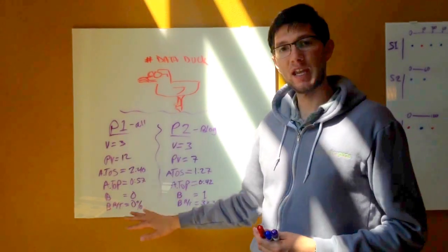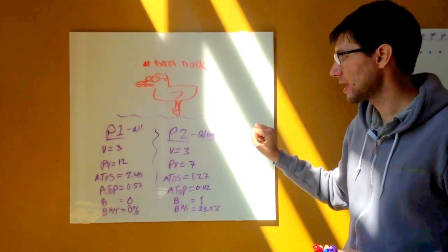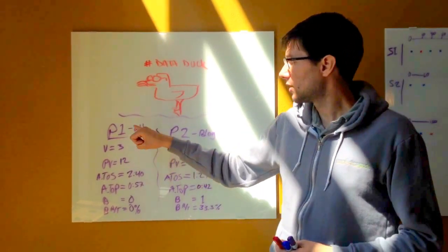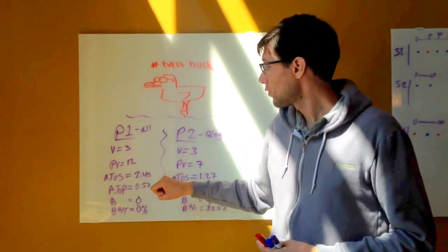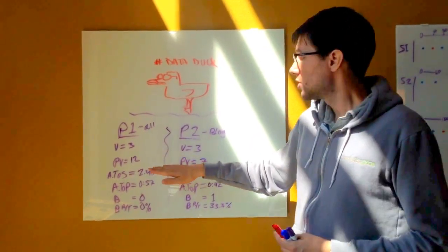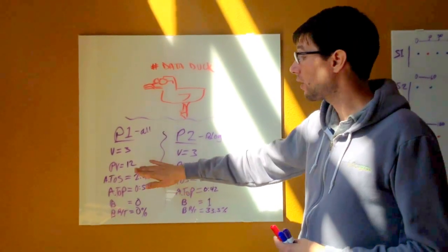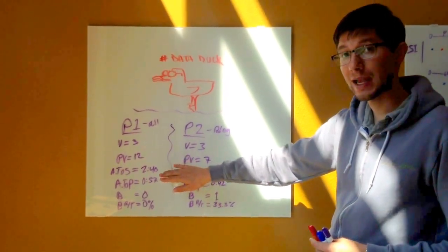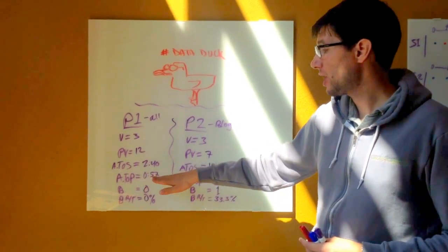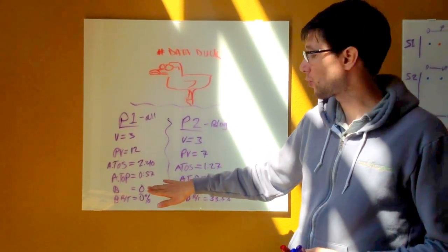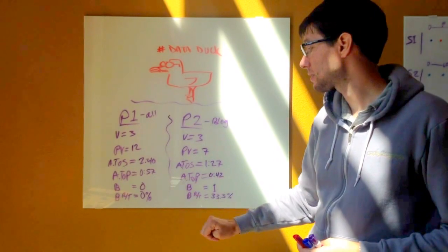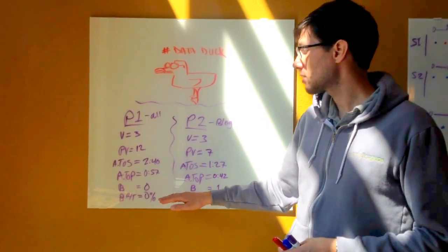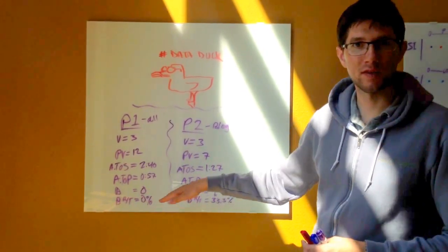So I've summarized some data here. There's been three visits in this date range we're looking at. In the first profile, the one that aggregates all the data together, we see three visits, 12 total page views, an average time on site of 2 minutes and 40 seconds, average time on page at 57 seconds per page on average, and no bounces, so a bounce rate of 0%.